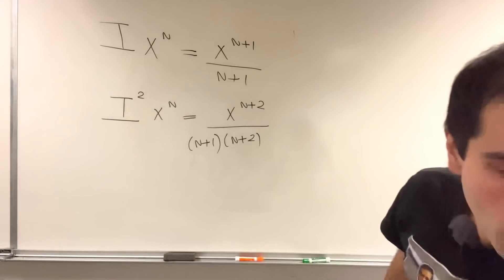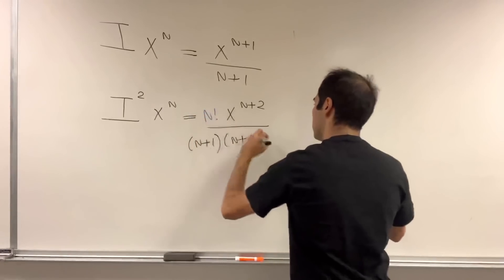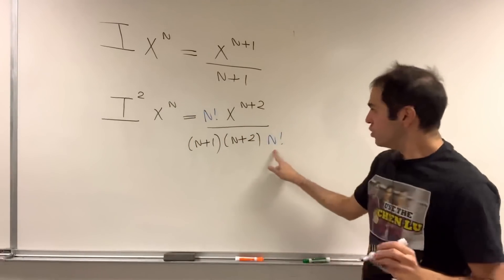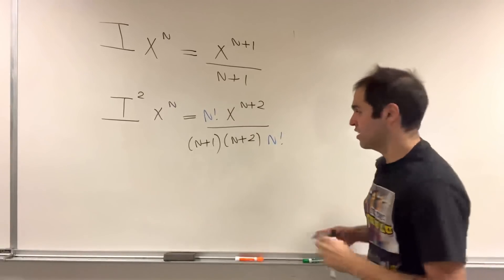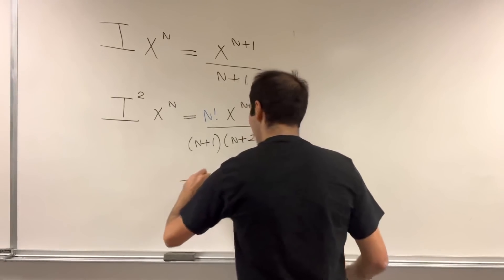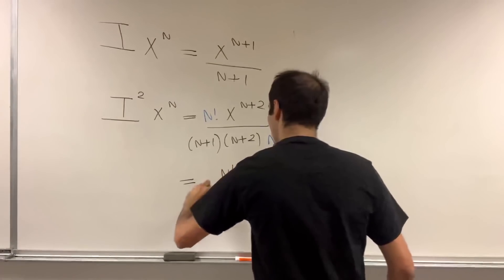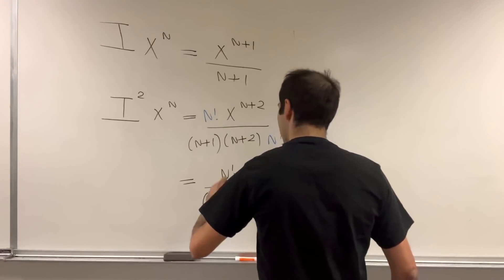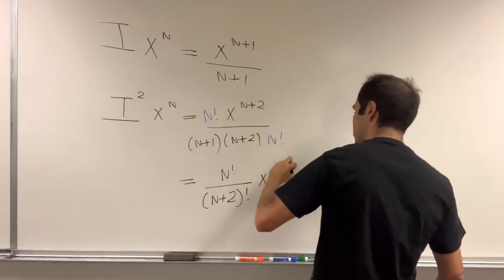And in fact, if you multiply top and bottom by n factorial, then you do get that the denominator becomes n plus 2 factorial. So the double integral of x to the n is n factorial over n plus 2 factorial times x to the n plus 2.